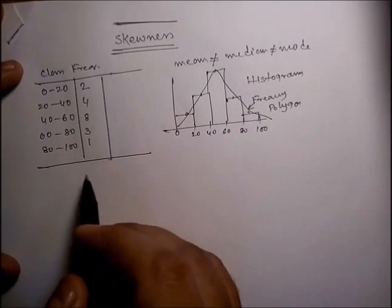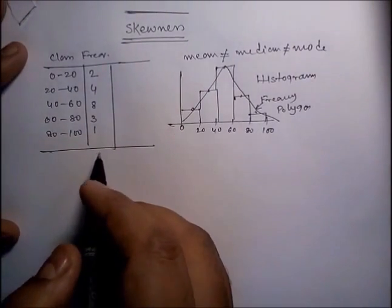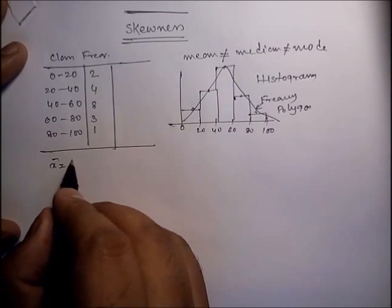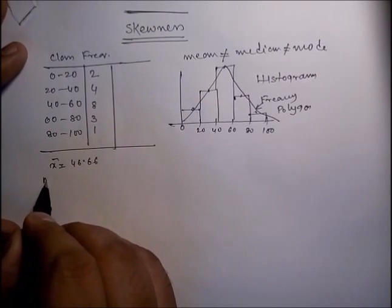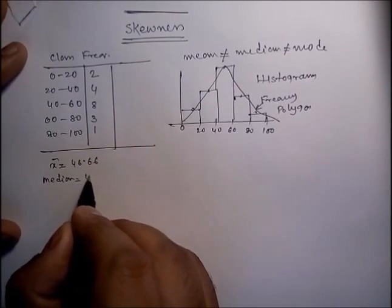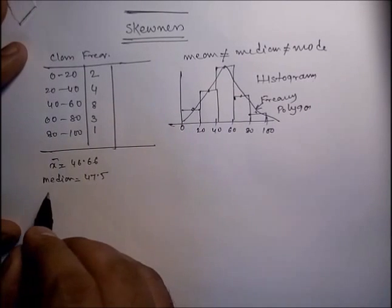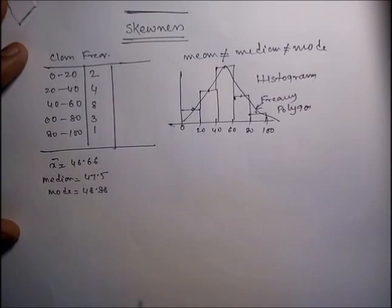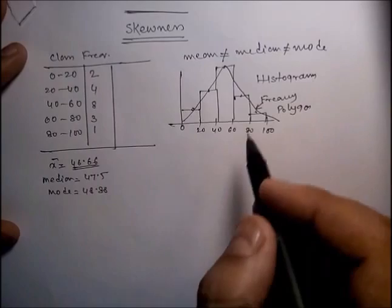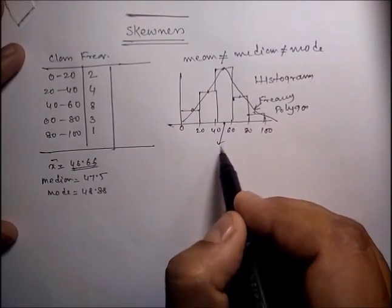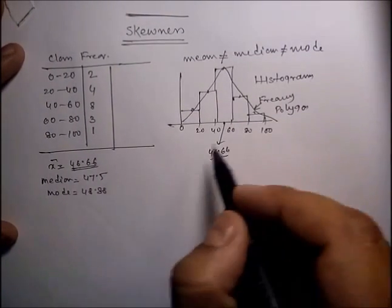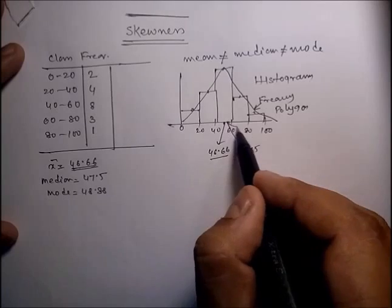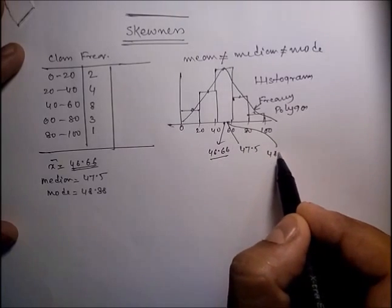For this particular grouped data, we can calculate the mean, median, and mode. The grouped mean of this data is 46.66, the median is 47.5, and the mode is 48.88. These values will fall at slightly different points on the frequency polygon.